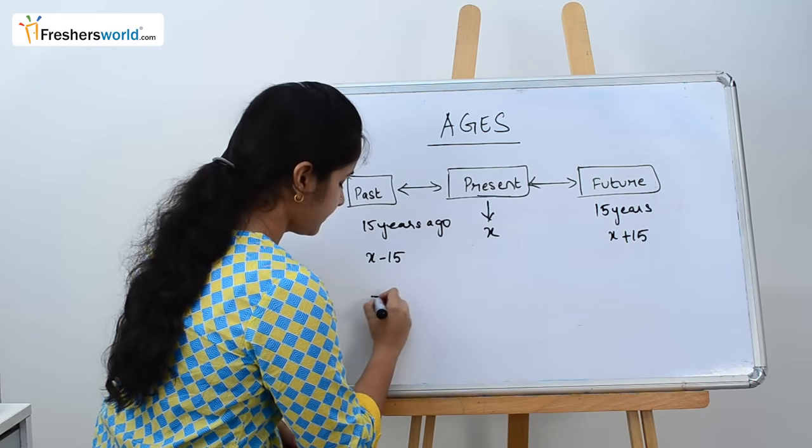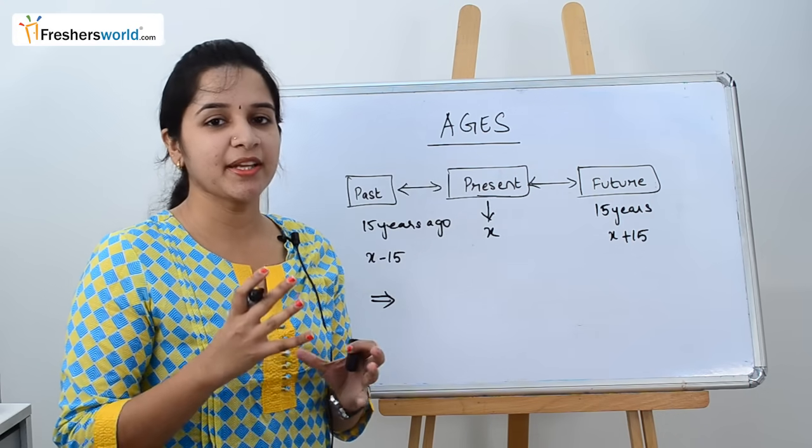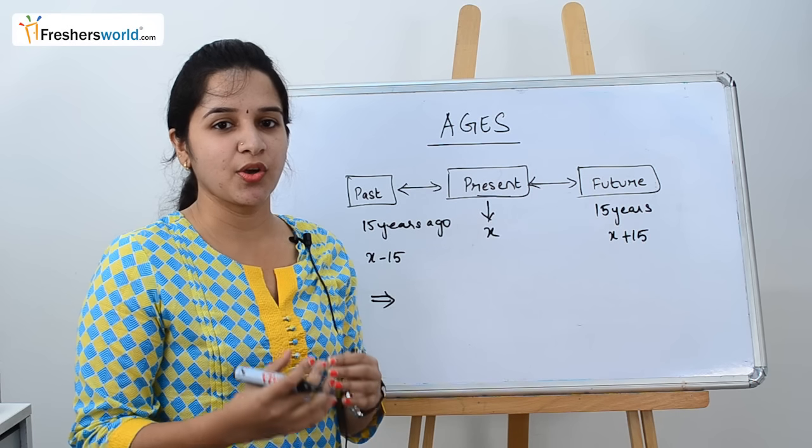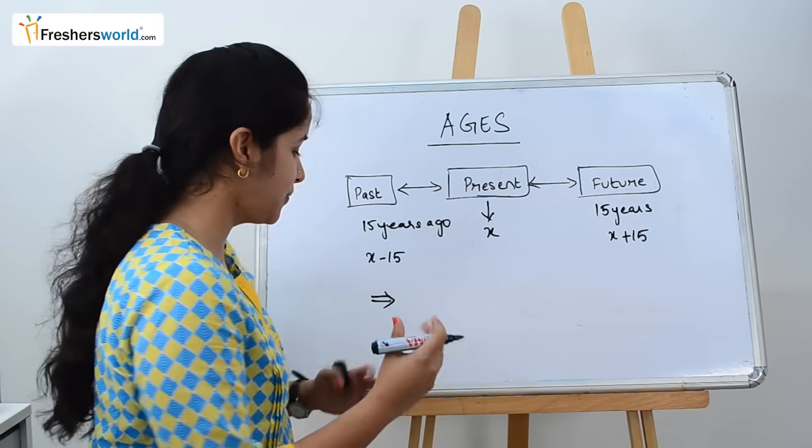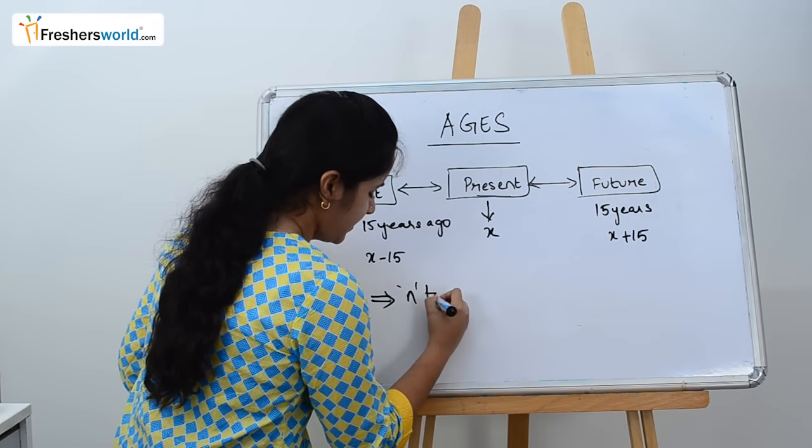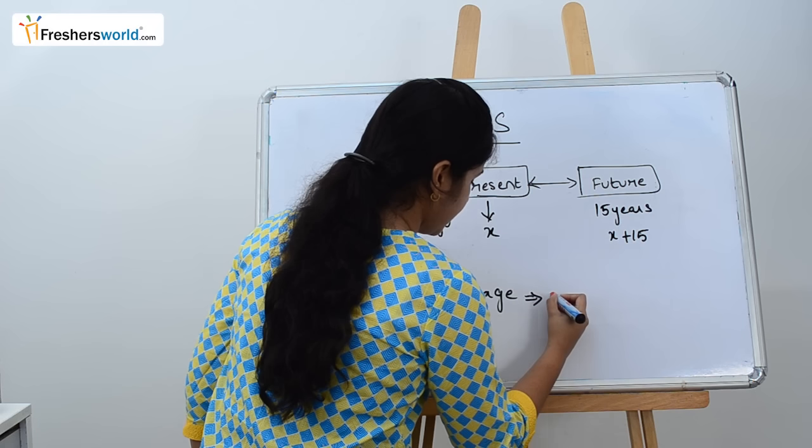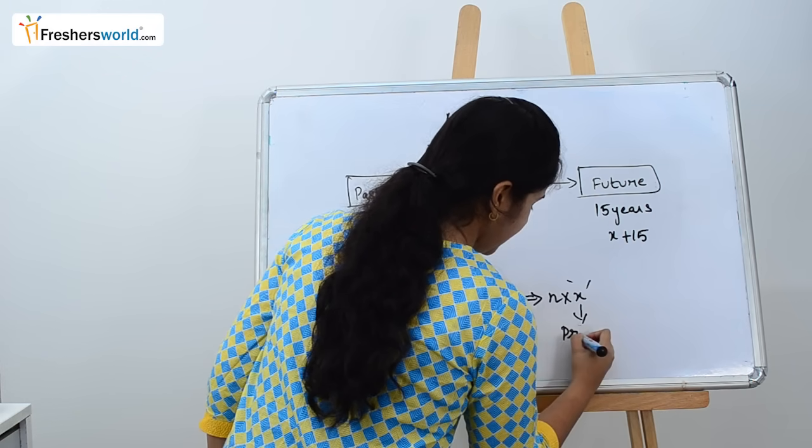Similarly, they will also ask in the question, let's say the age is multiplied by numerical N, like N times Ram's age or X times Sita's age. You always need to multiply. N times age is nothing but N into X, where X is your present age.